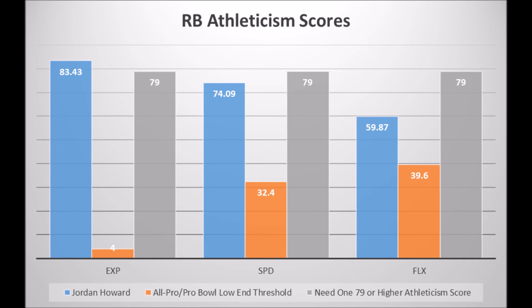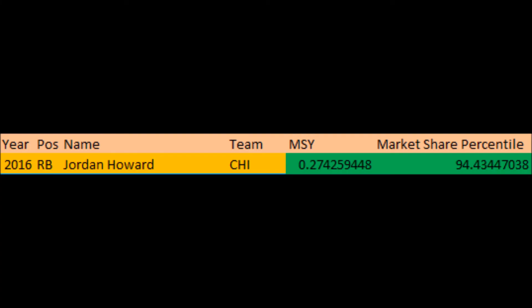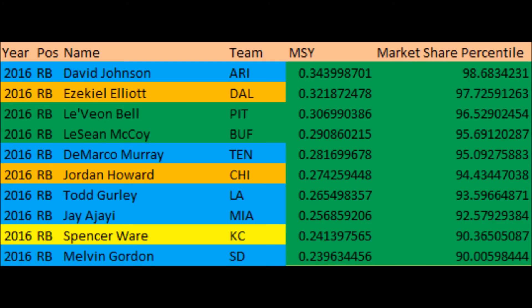Looking at this running back coming out of college — if you're a GM and I tell you Jordan Howard has Pro Bowl-level production and Pro Bowl-level athleticism traits, you just draft that guy in round five, essentially day three? I don't know why NFL teams do what they do. In 2016, Jordan Howard had a 94.43 overall mark share production score compared to all 2016 running backs — he was essentially the sixth most productive running back in 2016. This coming from a day three back is crazy.